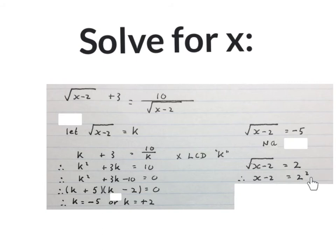We square both sides to get rid of the square root, and then finalize by solving for x. So x is equal to 6 in this equation.